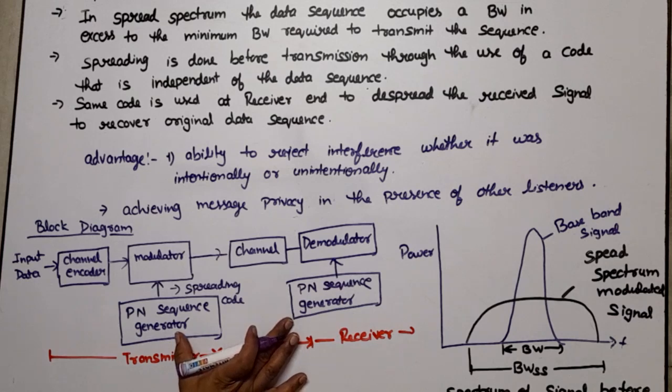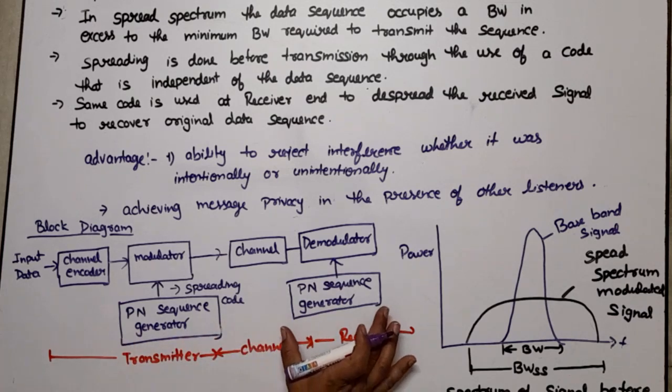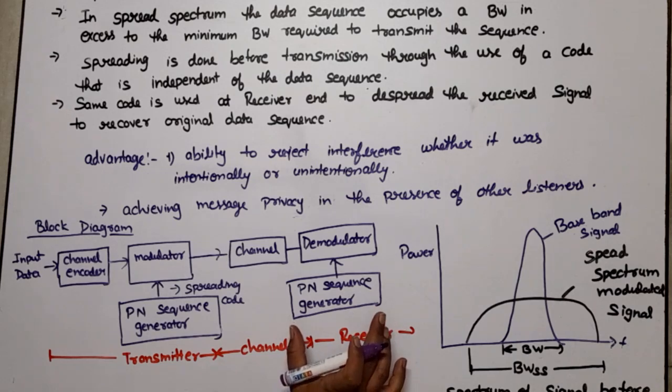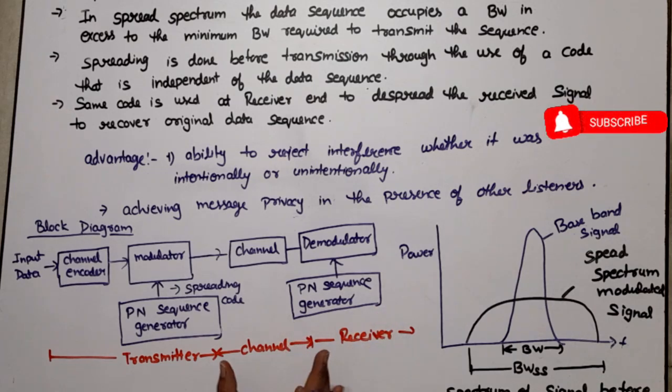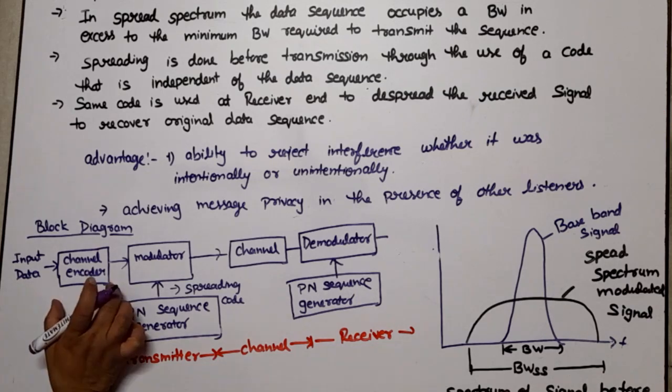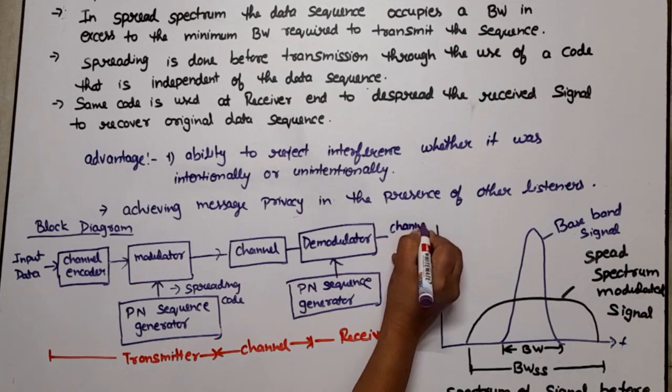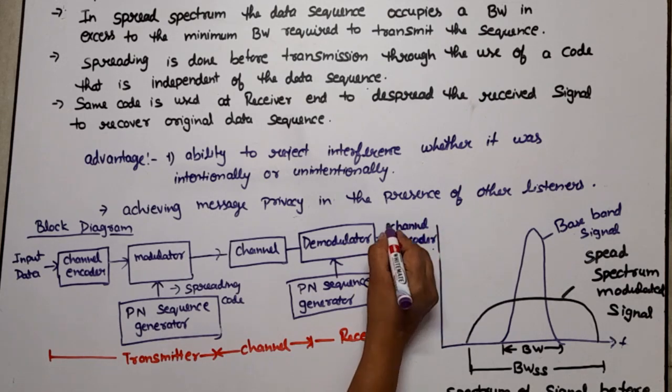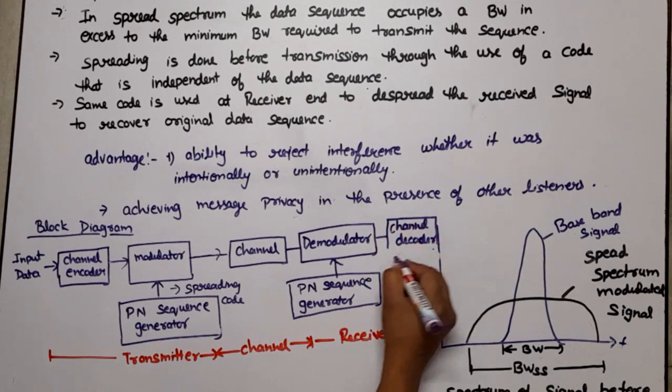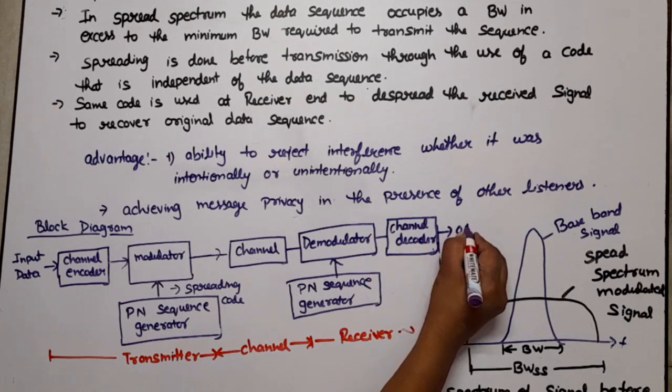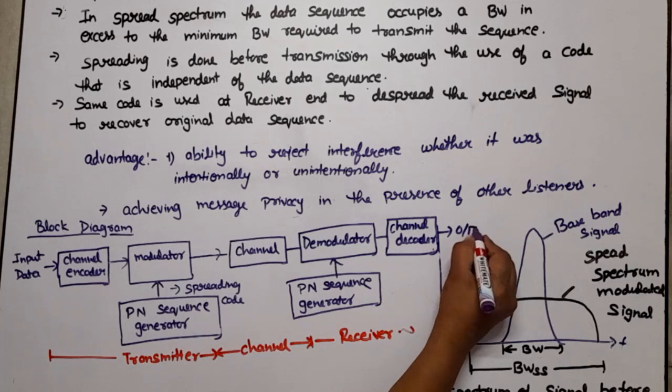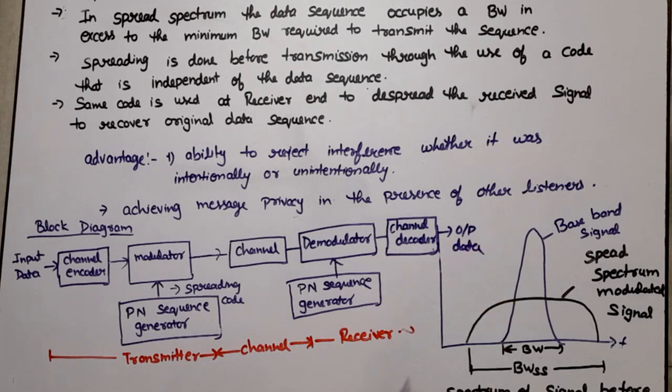Here at transmitter it's used for spreading, at receiver for despreading. But receiver can only decode when it knows what was the sequence which was used at the transmitter end. Now output of demodulator is applied to the channel decoder, just opposite process of transmitter. Output of this channel decoder will be output data.